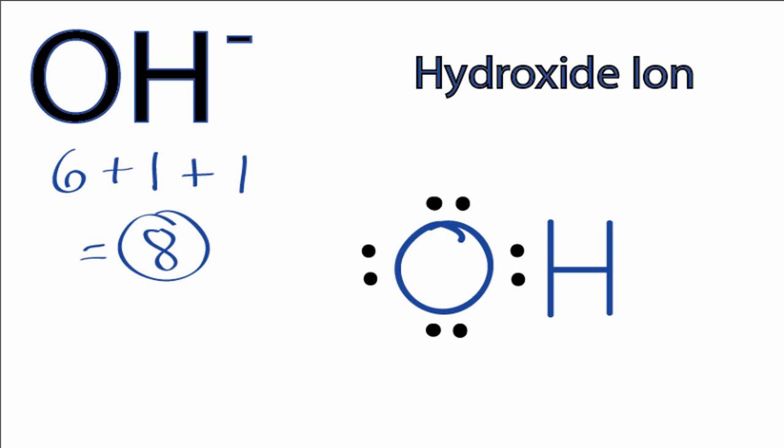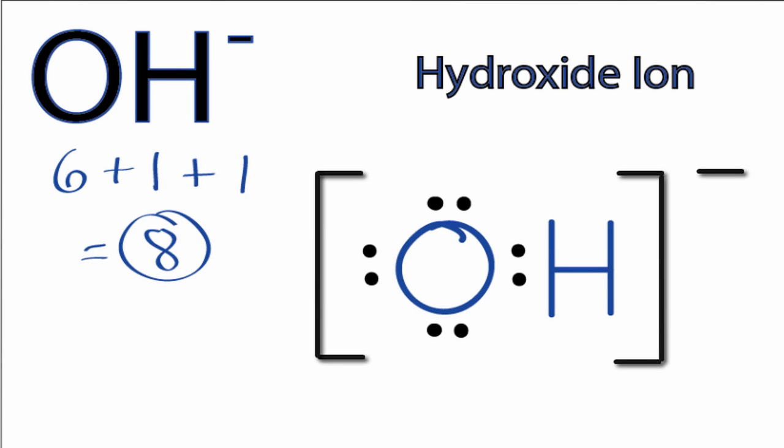One last thing, we do need to put brackets around it and a negative sign to show that it's an ion. So that's it. That's the Lewis structure for OH minus.